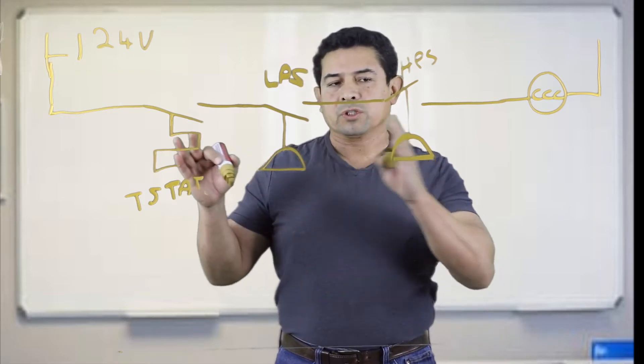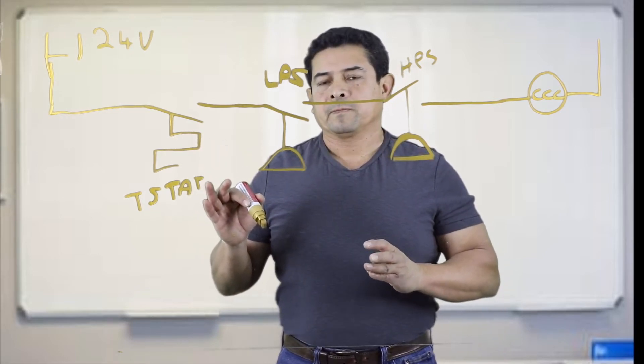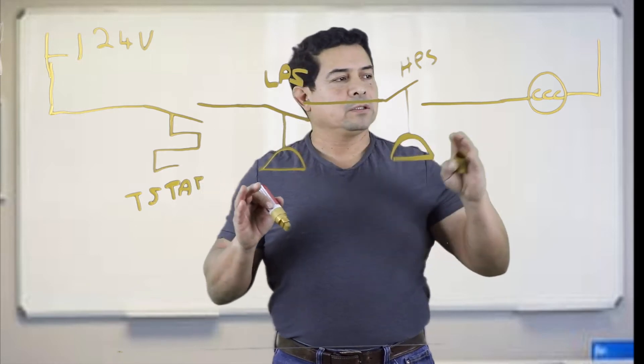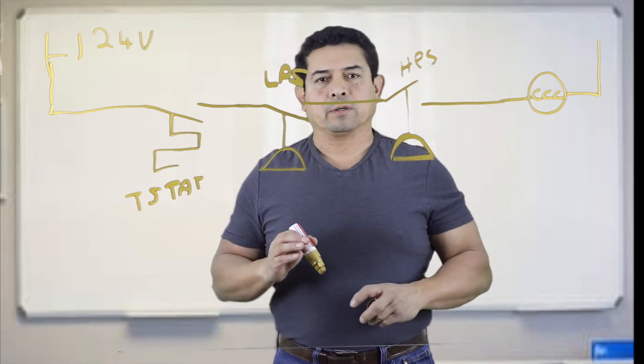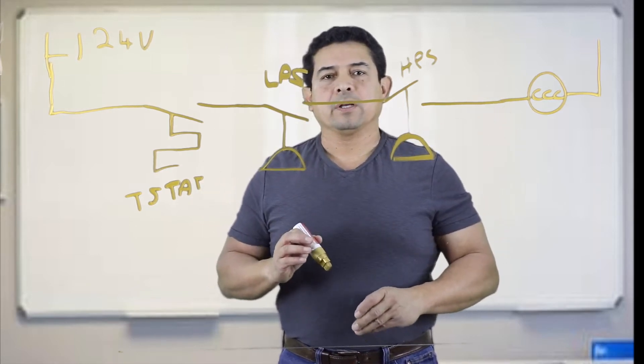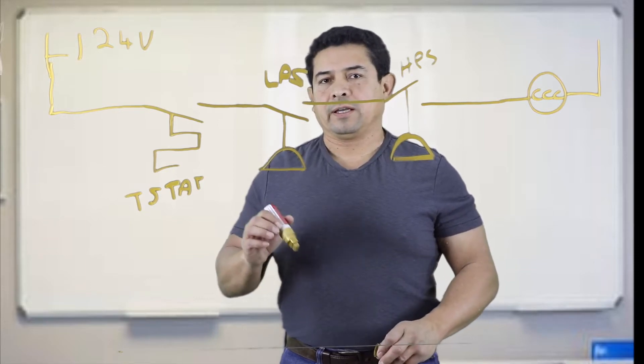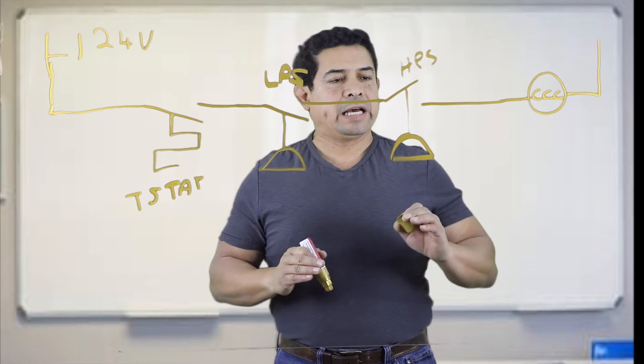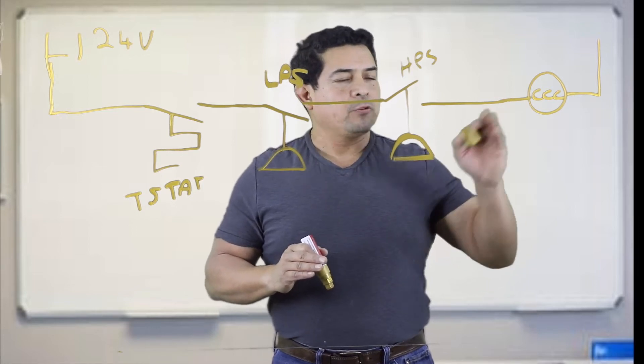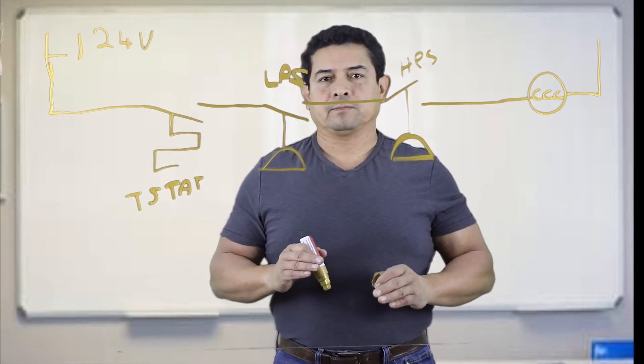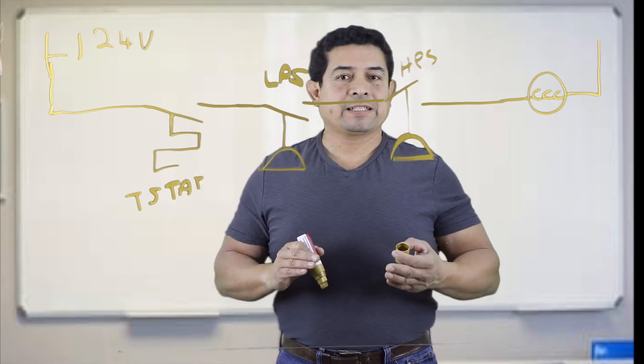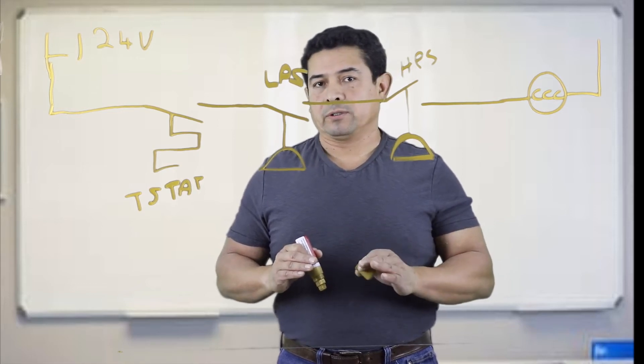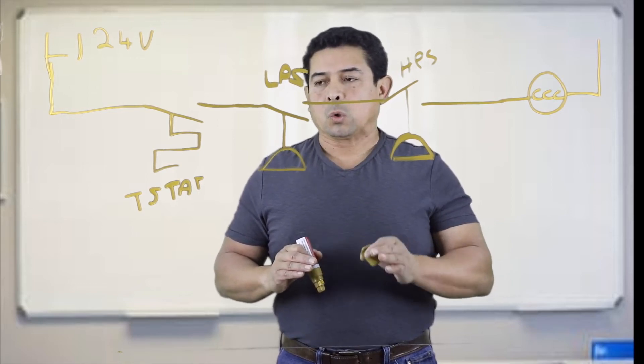Now, these three switches, they're all in series. So all of these have to be closed for that to work. That is what you call an AND circuit. This one, AND this one, AND this one have to be closed for that to work. You could also look at it as an OR circuit, depending on your operation.